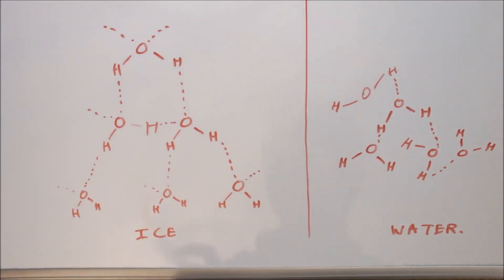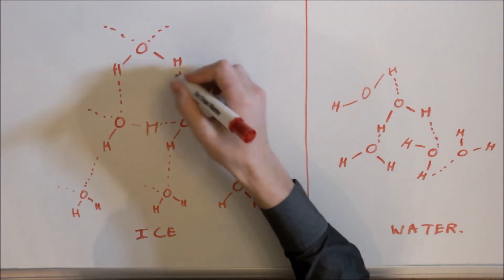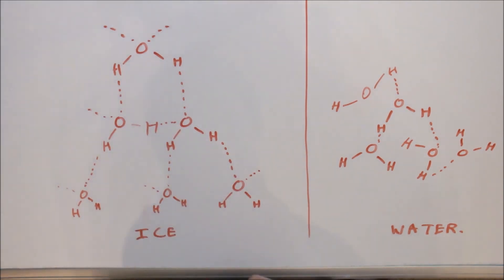Ice is less dense than water, as every water molecule in ice makes four hydrogen bonds, whereas in water, they only make two.